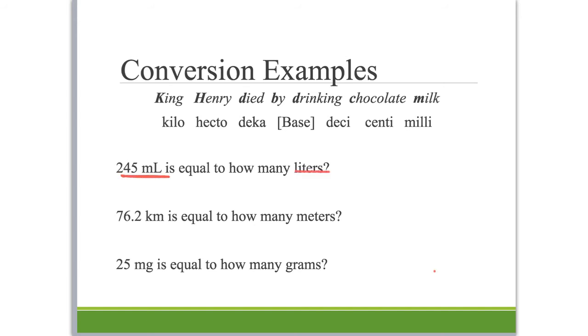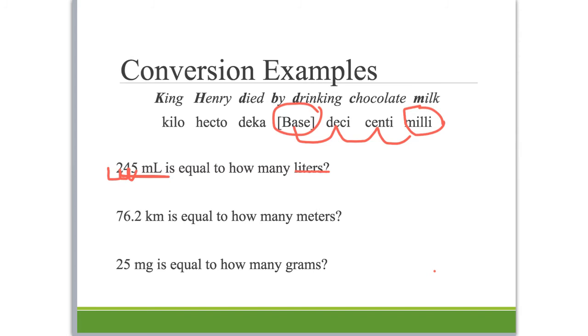We are starting on milliliters down here at the end of our prefixes, and we're going to move to liters, which is the base. So we put our pencil or a finger on milli and count how many jumps we have to go through from milli to liter: that's one, two, three, and we're moving to the left. So the decimal point also has to move to the left. It's at the end of 245, so it's going to move over one, two, three and land in front of the two. You always put a zero first, so it's 0.245.